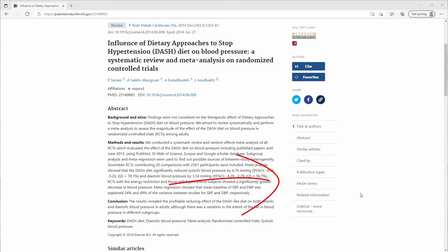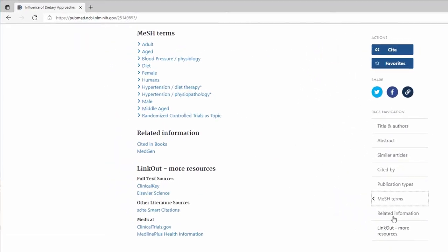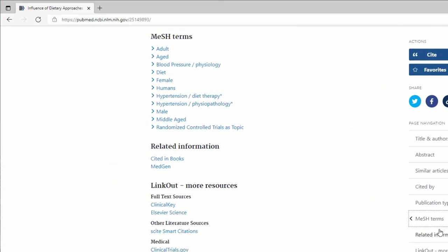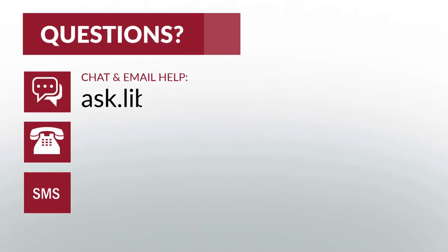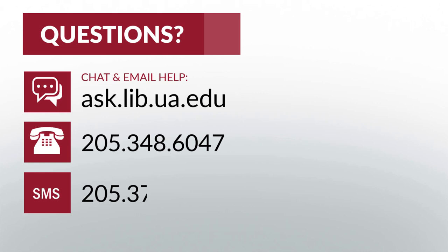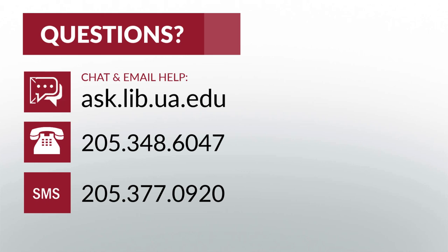Finally, the record page of the article is also an excellent place to find relevant subject headings. On PubMed, they're called MeSH terms. You can simply click on the list of terms of any relevant article. And that's all for this video. Hopefully you now have a better understanding of what an exploratory or scoping search is and why it's an important step in the systematic review process. And remember, if you have any questions, just ask a librarian.